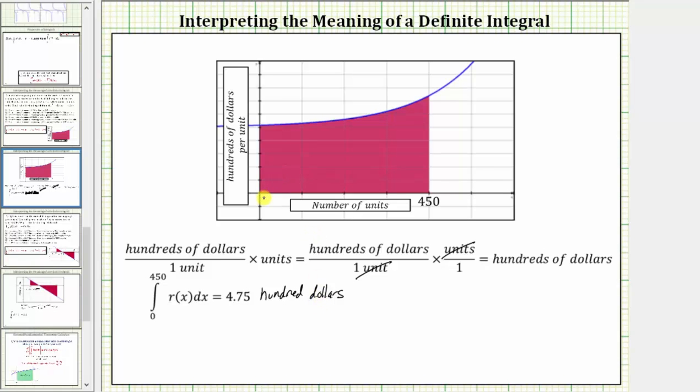We can think of this area as the accumulation of the change of revenue from 0 units all the way out to 450 units, which means this area represents the total revenue generated from selling the first 450 units, which we now know is 4.75 hundred dollars. If we wanted this to be in dollars rather than hundreds of dollars, we'd have to multiply 4.75 by 100.